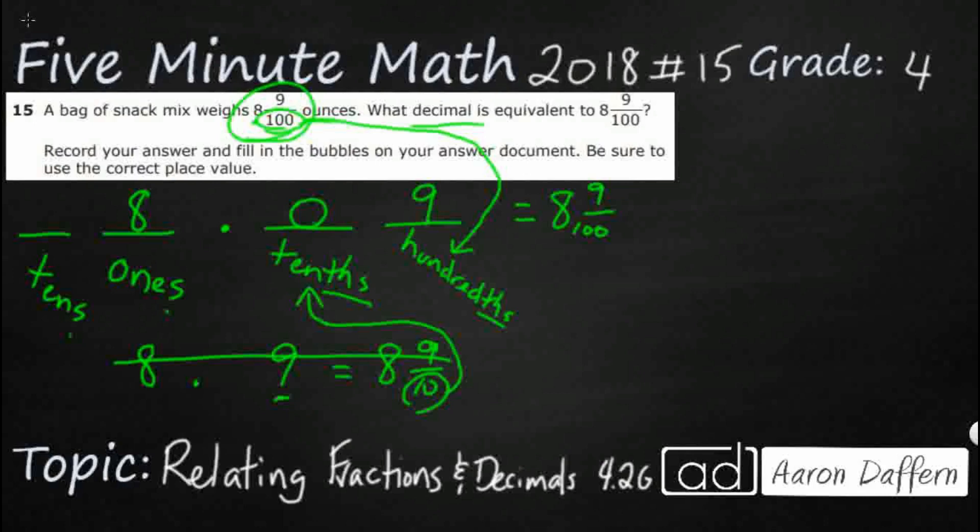You would say eight, and the decimal becomes 'and' when we're saying it out loud, nine hundredths. And that's the same as how you would say this: eight and nine hundredths.